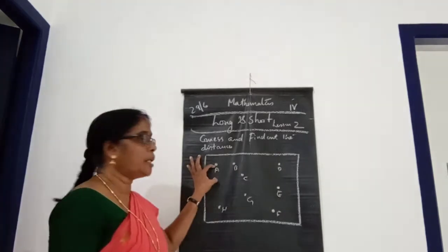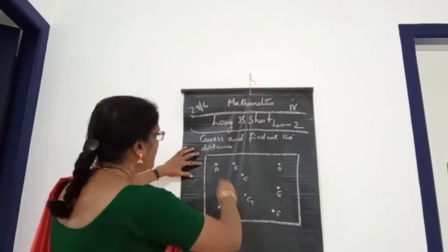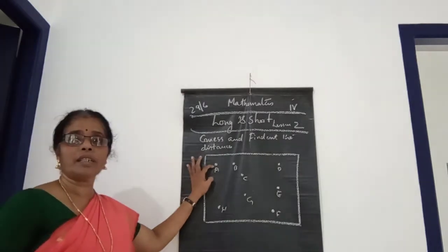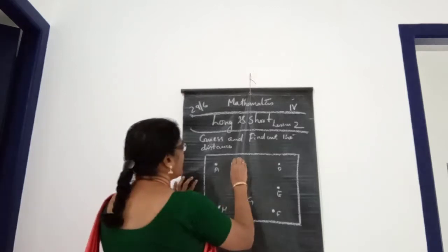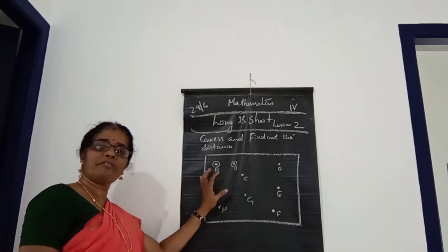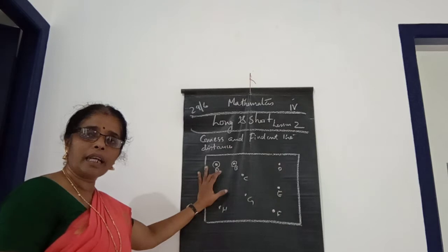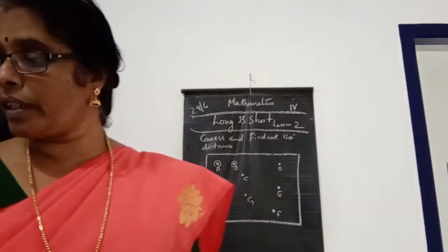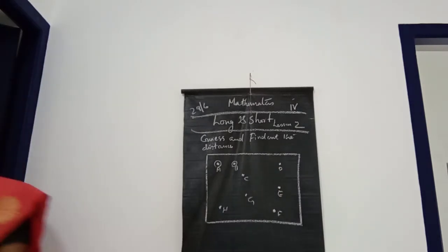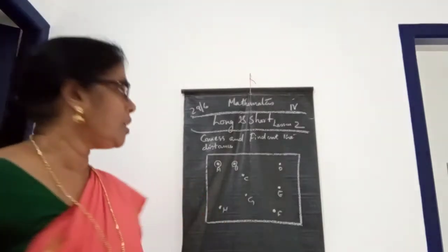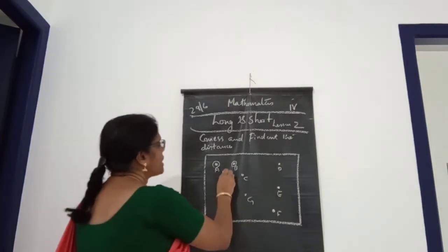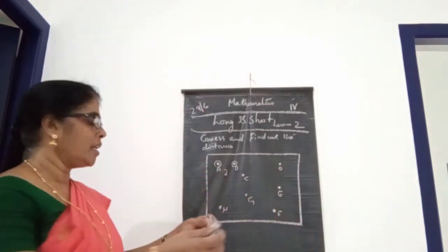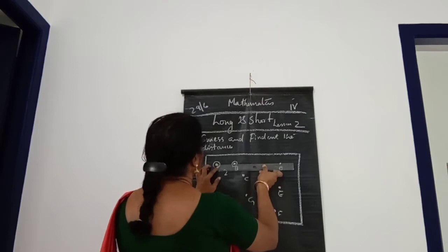Look at children, the name of this dot is A. Guess and find out the distance — that is the question. This one is dot A and this one is dot B. Can you guess what is the distance of these two? That is very nearest. B is nearest to A, so there is a small distance. You can guess it and after that you can check it using your scale. I am guessing this one is two centimetres, but after checking — this one is seven centimetres.